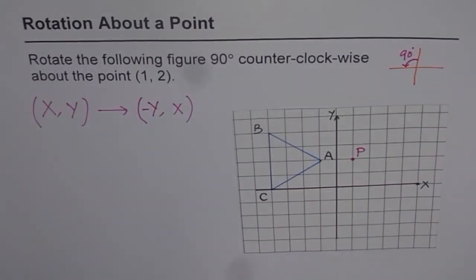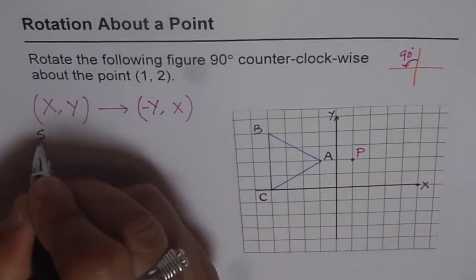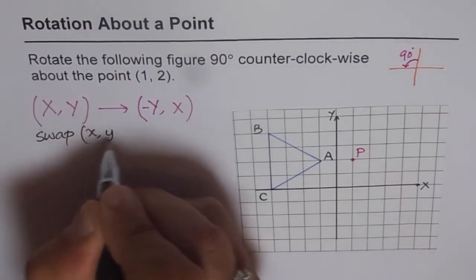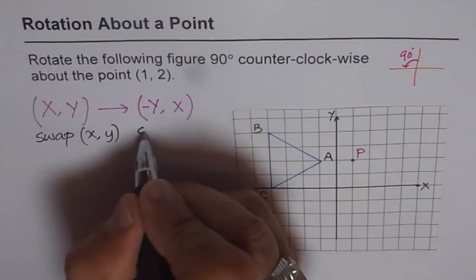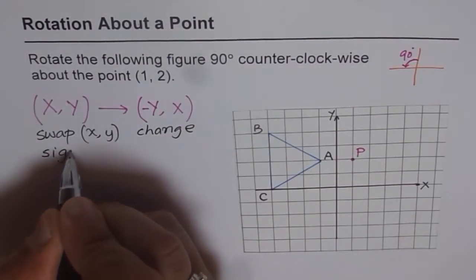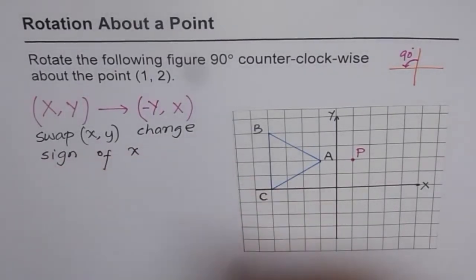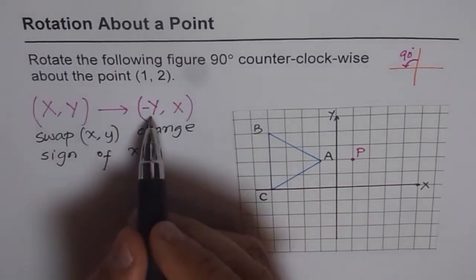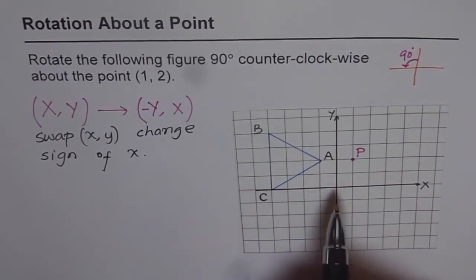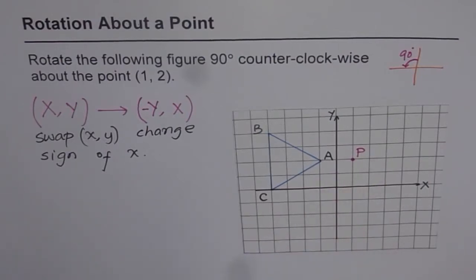To summarize: swap x and y, then change the sign of x. That is what you do when rotating 90 degrees counterclockwise about the origin. Now here we are rotating about a point which is not the origin, so we cannot apply this rule directly.